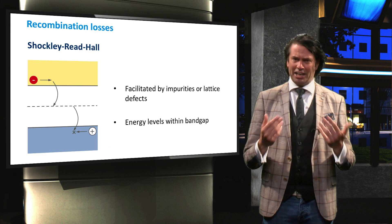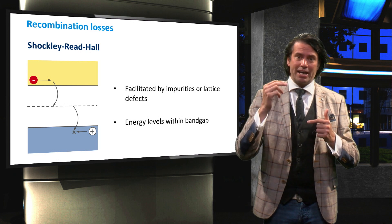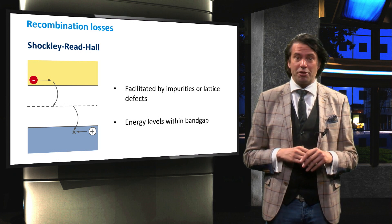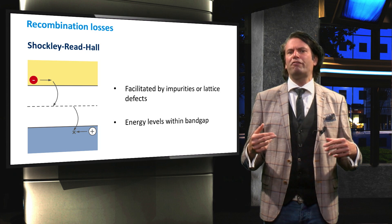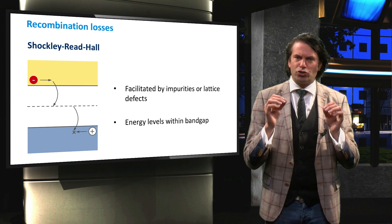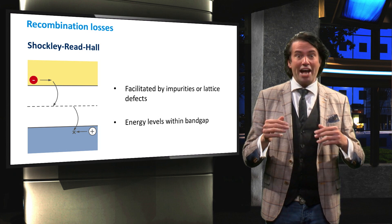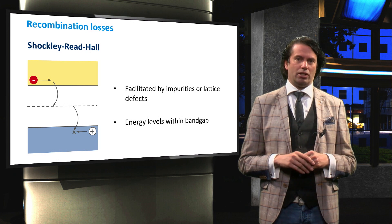The defects introduce energy levels within the bandgap, which facilitate carrier recombination. Shockley-Read-Hall recombination is therefore of particular interest at the surface of the solar cell, or at the interfaces of different layers in a solar cell.